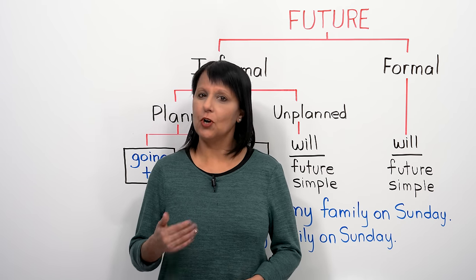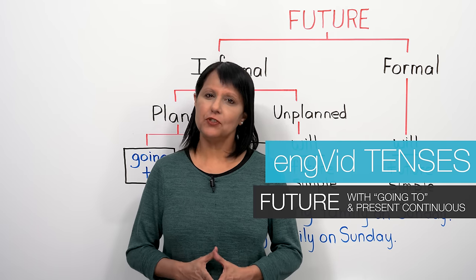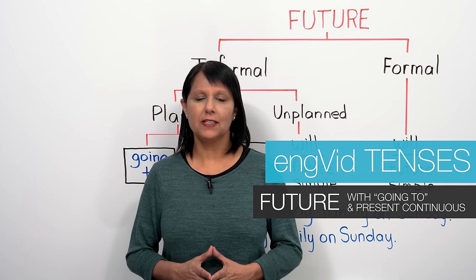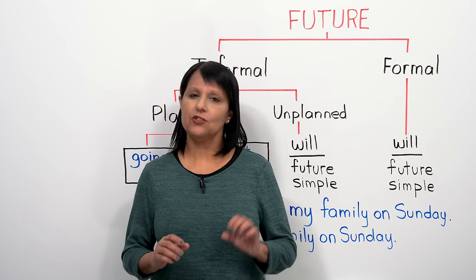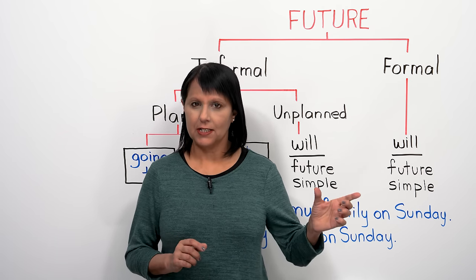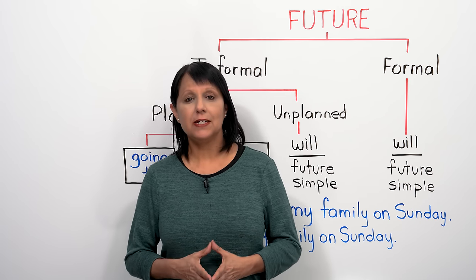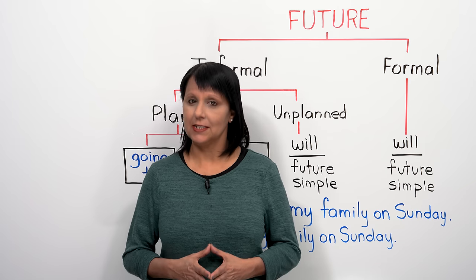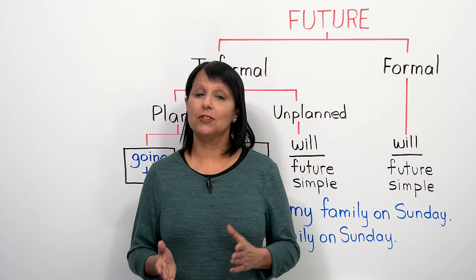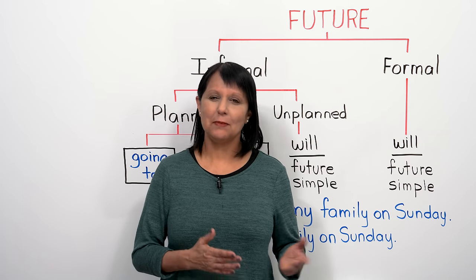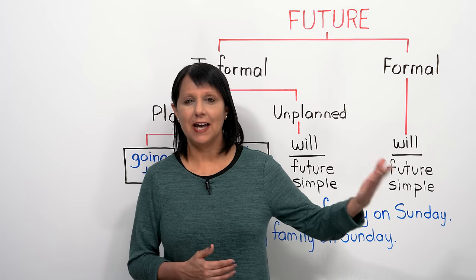In this class, you will learn two common ways to talk about the future in English. The first way is by using the words 'going to.' This is not a tense — it's just a phrase, an expression that we use to talk about the future. The second way is by using the present continuous. This is a tense, and it's used not only for the present, but also to talk about the future.